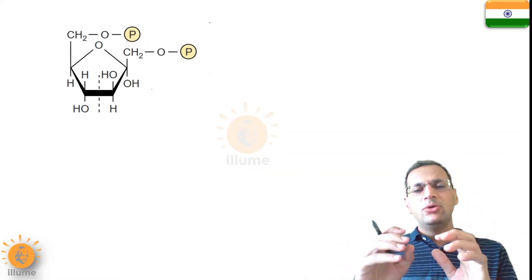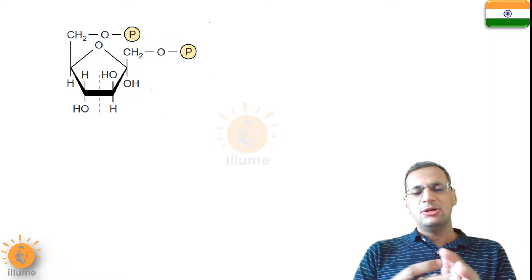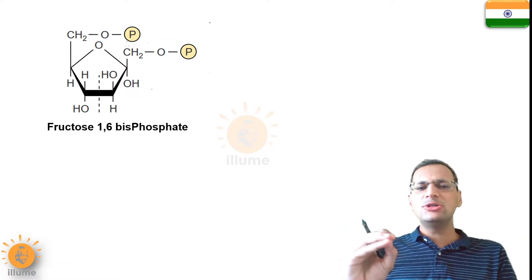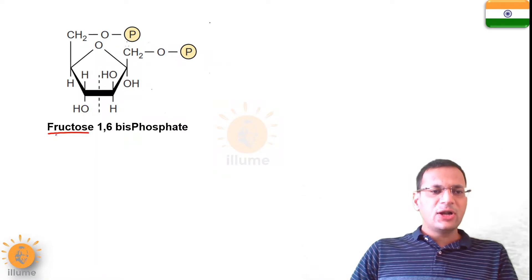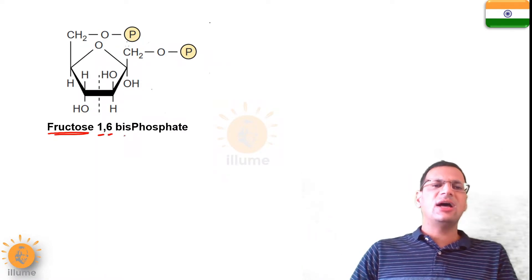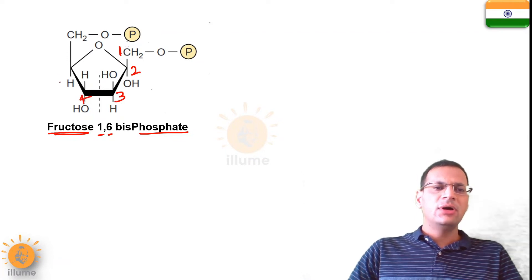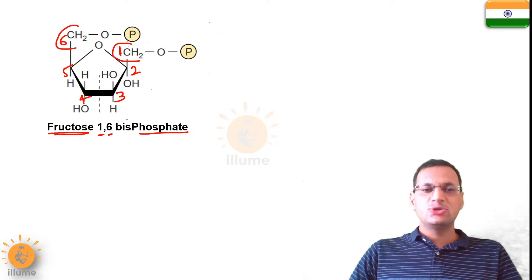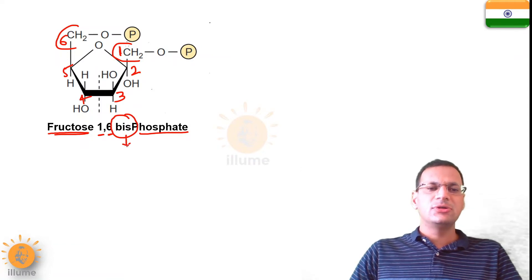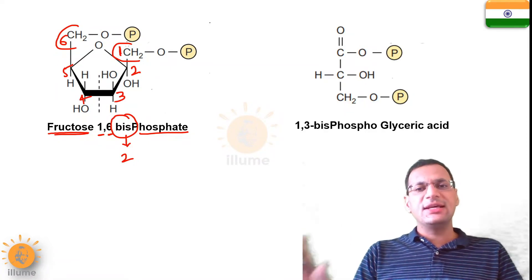Now I will show you the examples of bisphosphates. Both of these examples you must be studying in glycolysis — they are products in glycolysis. The first molecule is fructose-1,6-bisphosphate. This means that in the molecule of fructose, a phosphate group is attached on the first carbon and on the sixth carbon. On carbon number one and carbon number six, phosphate groups are attached, so we use the word 'bis' — bis also means two.